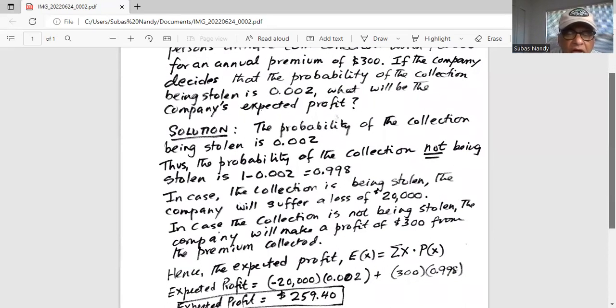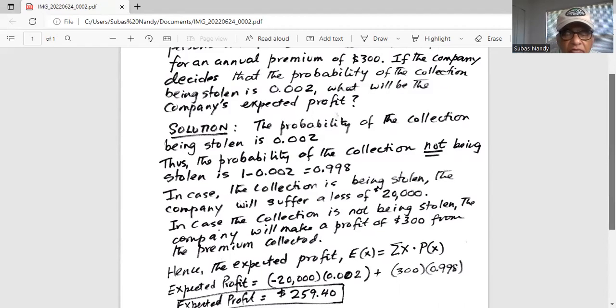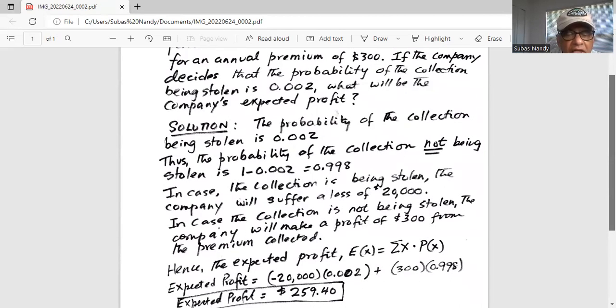So when it is stolen, the company loses $20,000. So it is negative 20,000 multiplied by the probability of that random event is 0.002. If the coin collection is not stolen, then the company will make a profit of $300 from the premium collected multiplied by the probability of that event is 0.998.